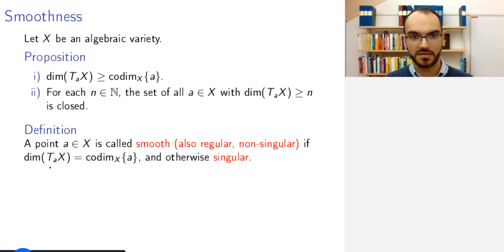So what we do now is we define that a point is called smooth or also regular or non-singular if the dimension of T_a X, which is at least the co-dimension of a, is in fact equal to the co-dimension of a. If a point is not smooth, it is called singular.